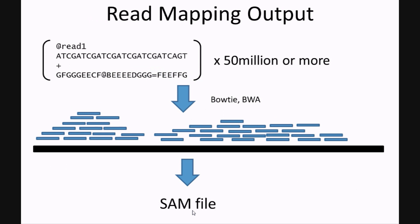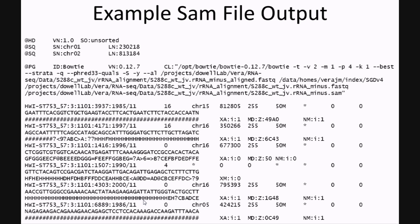Using either Bowtie or BWA will map your reads to a reference genome. What you get out of that mapping will be an alignment file, which you should always specify as a SAM file. This is an example of a SAM file — it's human readable, although everything exists in a code of some sort.